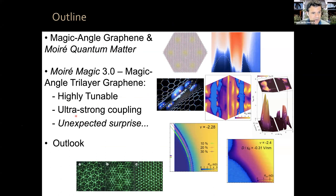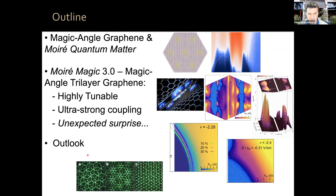I want to tell you about magic angle graphene and moiré quantum matter, since many people joining may not be so familiar with it. Then I'll spend most of the talk on Moiré Magic 3.0 — magic angle trilayer graphene. I'll show you that it's a robust superconductor, highly tunable, and realizes ultra-strong coupling superconductivity. I'll tell you about something we saw recently when we applied in-plane magnetic fields.